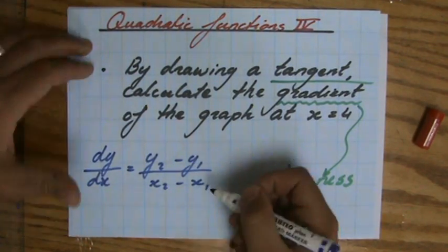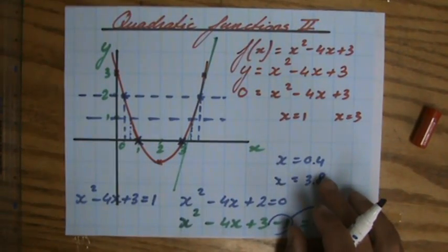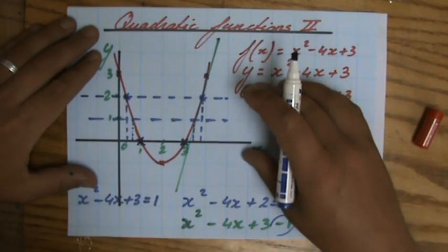Okay. So what do I need? I need two coordinates, and then I can calculate the gradient. So I'm going to look at my tangent, and I'm going to find two beautiful, nice coordinates.